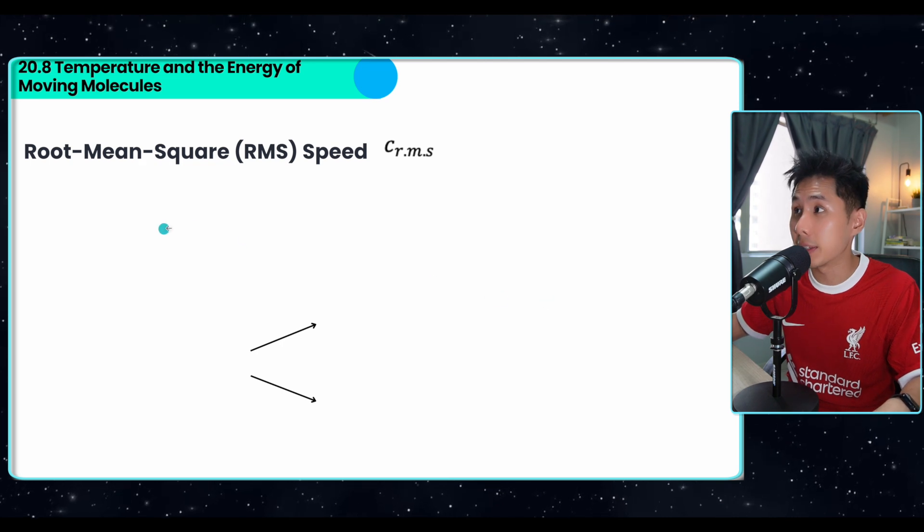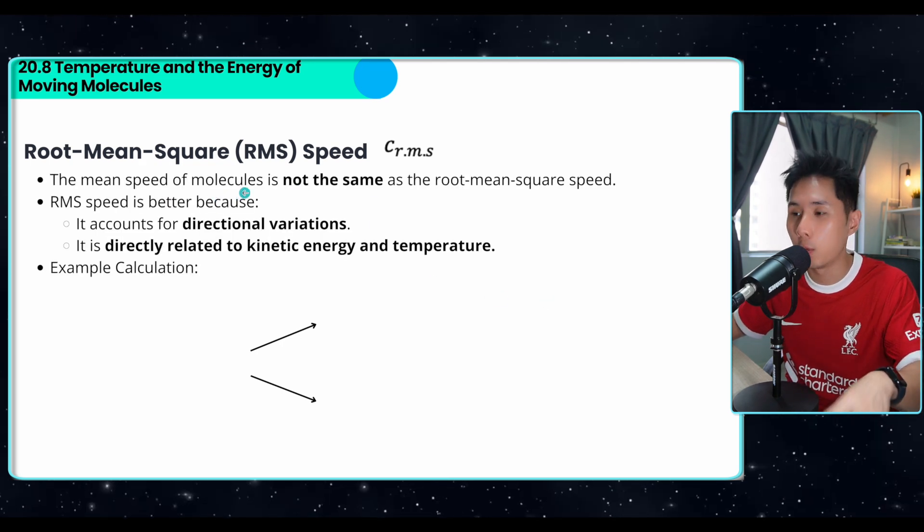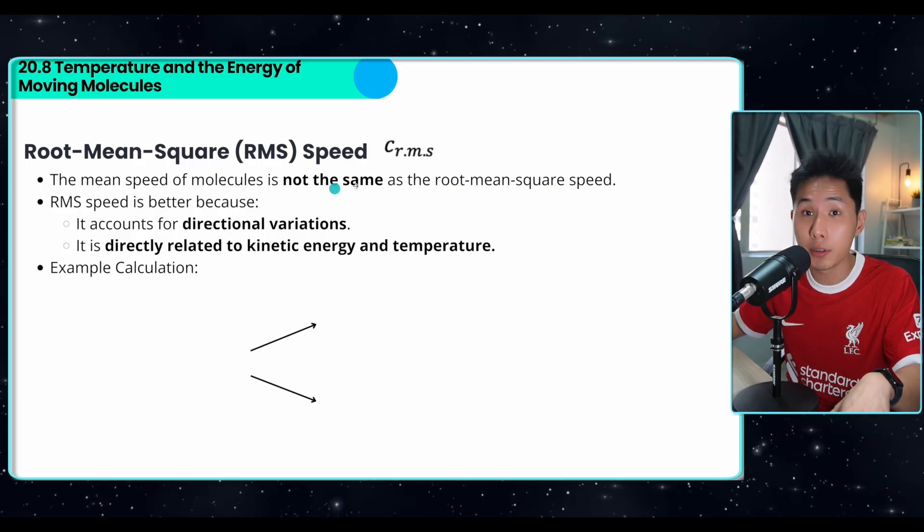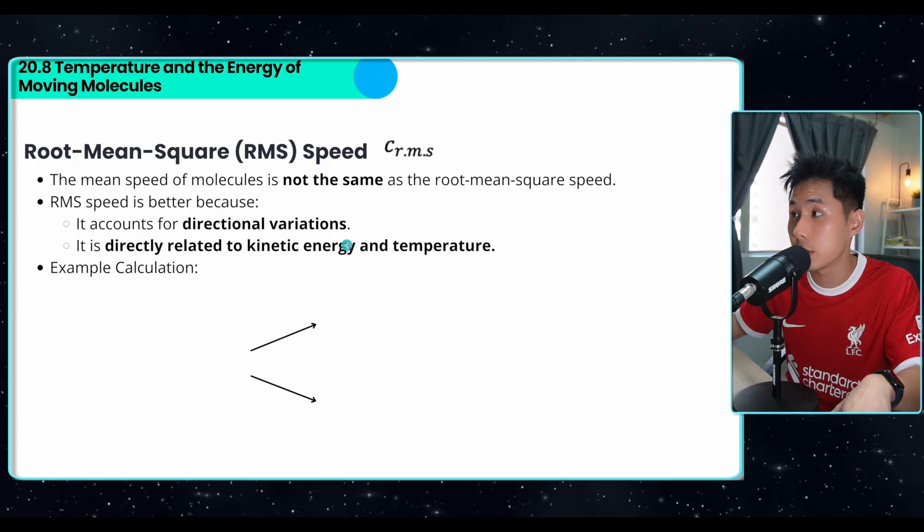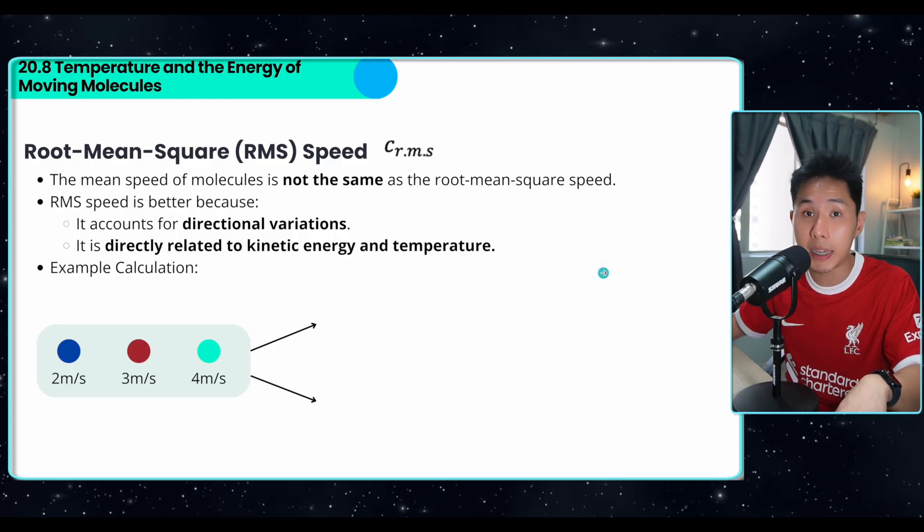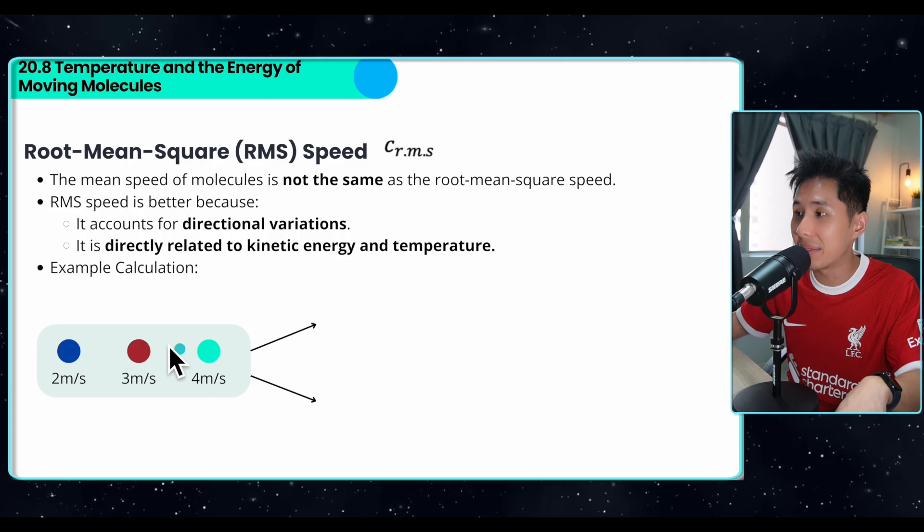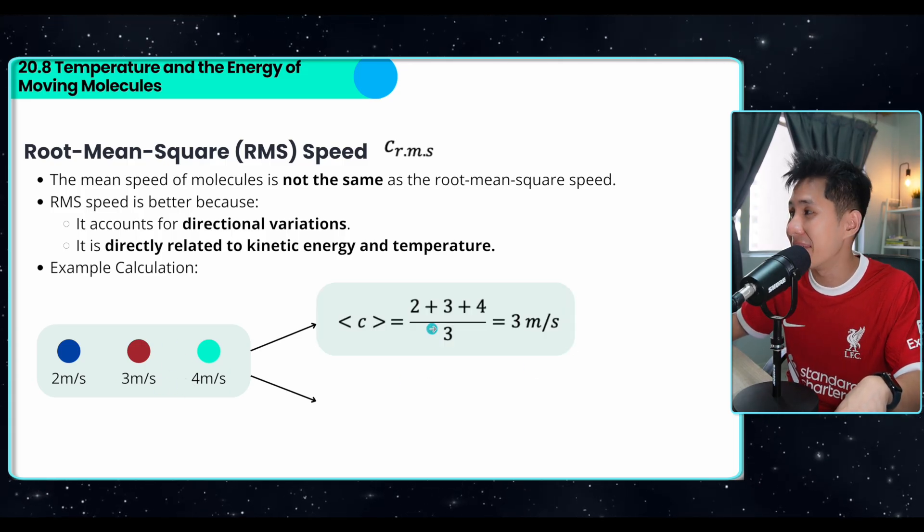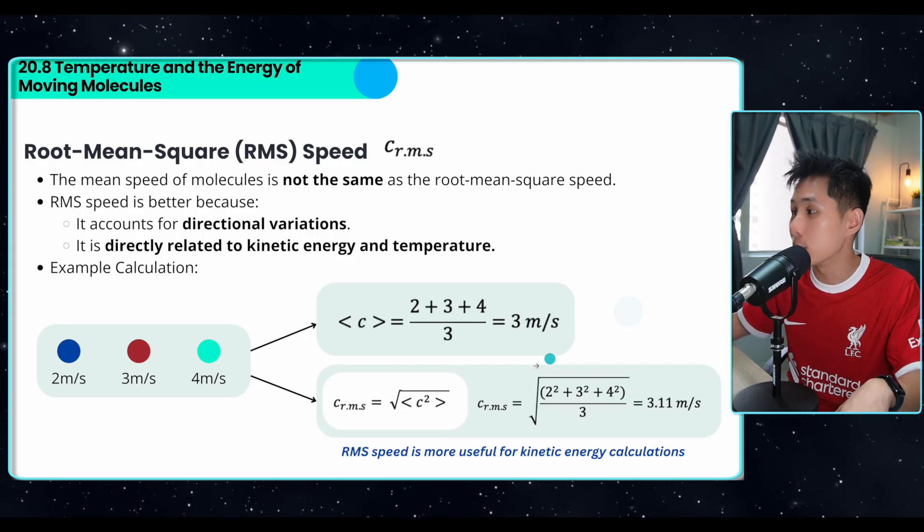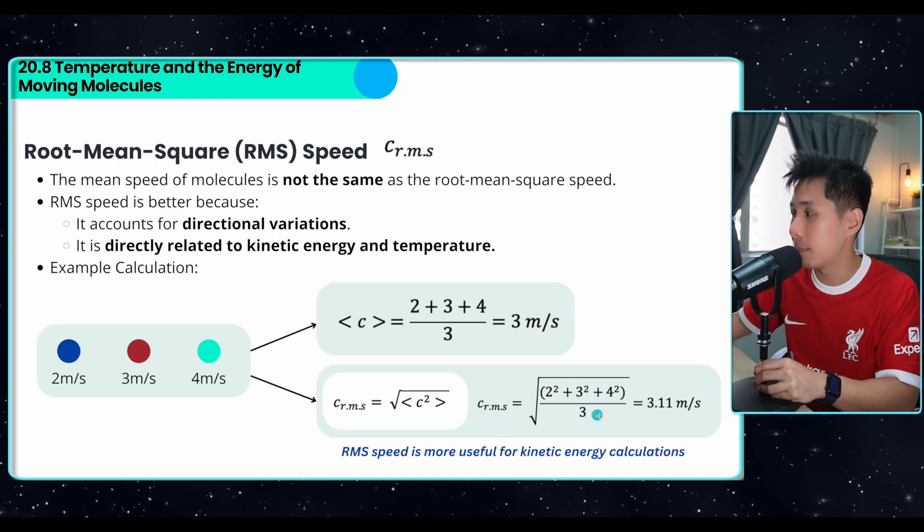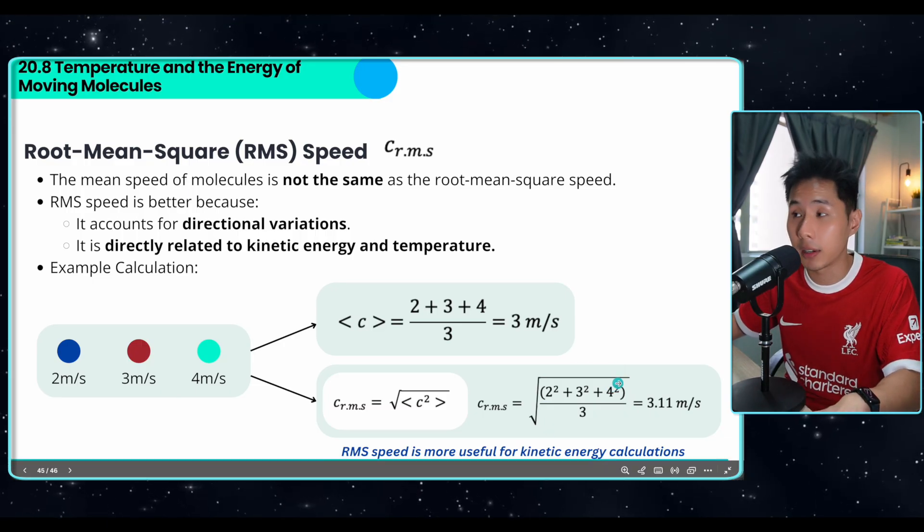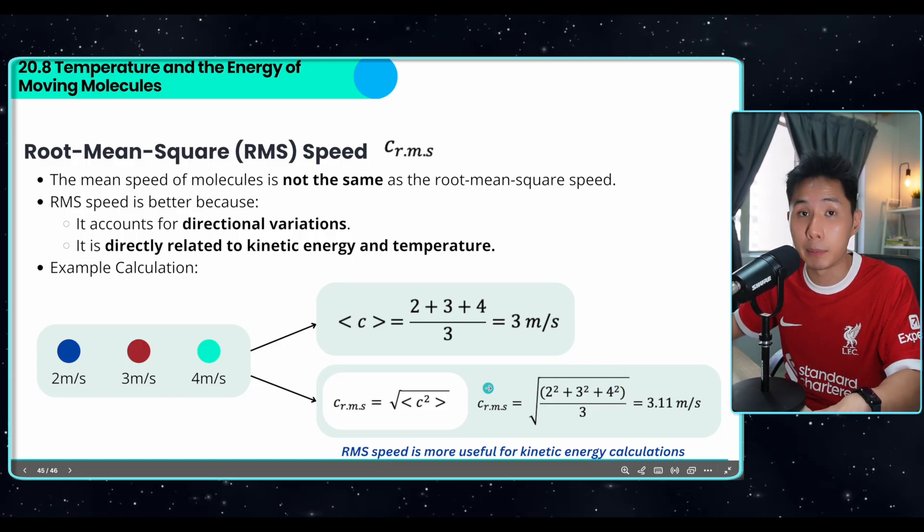So another quantity that you need to know is the root mean square speed. So the mean speed of molecule, which is the average speed of the particle, is not the same as the root mean square speed. RMS is used more often because it accounts for directional variation. It is directly related to kinetic energy and temperature. So let me just show you the difference between mean speed and root mean square speed. So this is the different particles, they have different speed, and the mean speed is 3 meter per second. Just add them out and divide. Whereas the root mean square, you have to square them up, divided by 3, and square root them. And that will give you this amount. RMS speed is more useful for kinetic energy calculation.